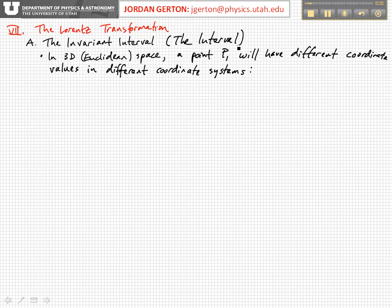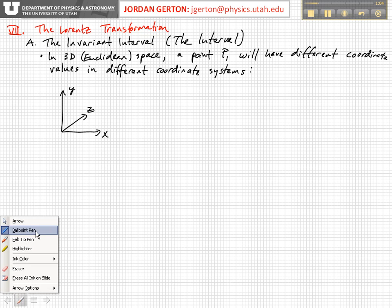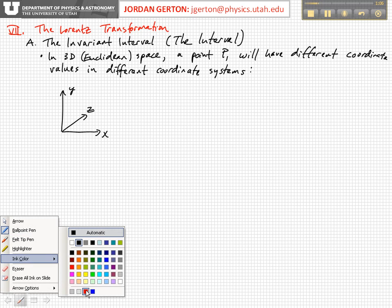First, let's think about the situation in just normal three-dimensional, that is Euclidean space. Let's imagine that we have a point in space and we have two different coordinate systems. For example, we might have one like this. X, Y, and Z. And let's imagine that we have a point here.